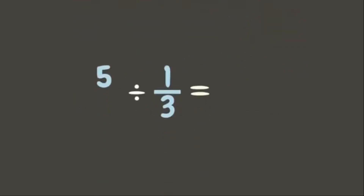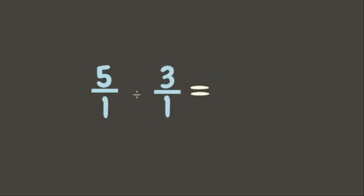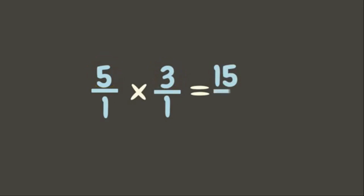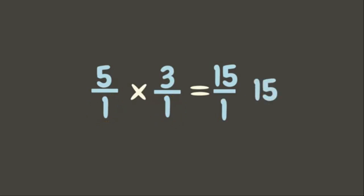How are we going to divide a whole number by a fraction? Let's put one as the denominator of the whole number. Next, get the reciprocal of the divisor. Change division into multiplication and let's multiply. Five times three is fifteen; one times one is one. Since the denominator is one, the answer equals fifteen, because fifteen divided by one is fifteen.